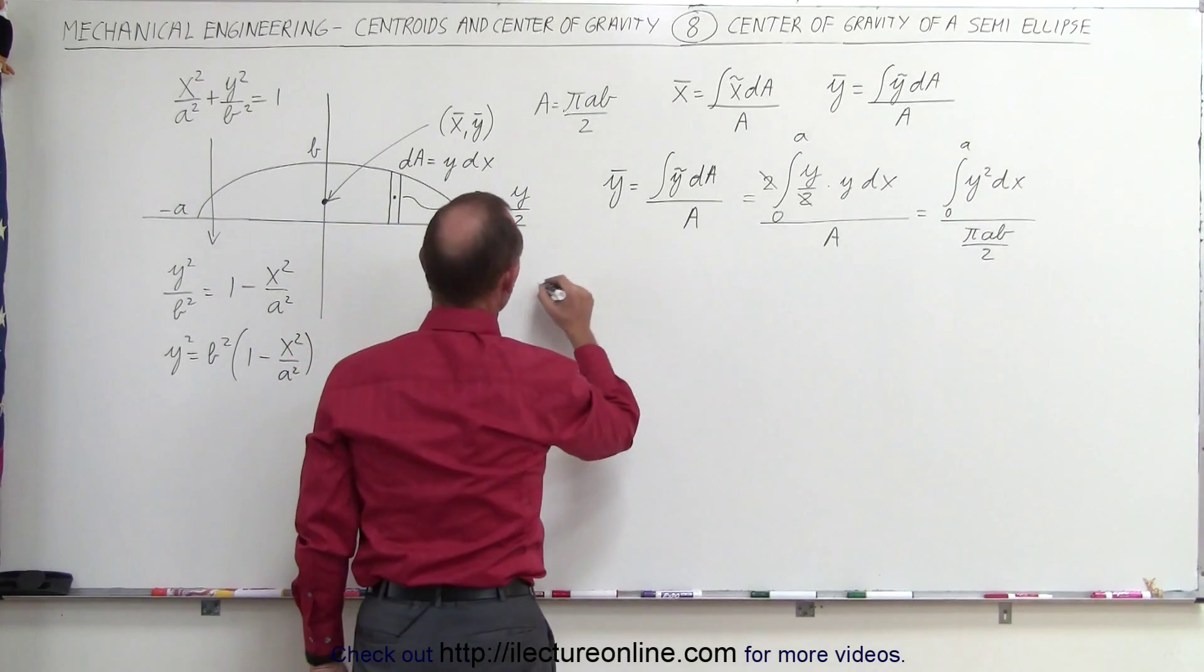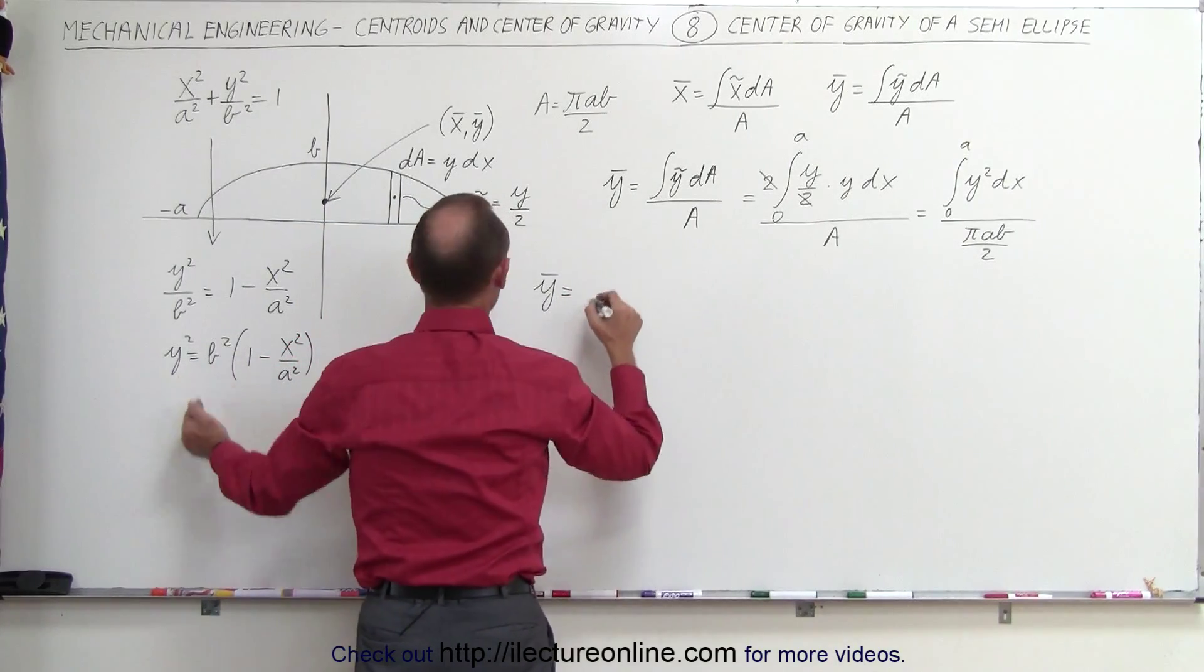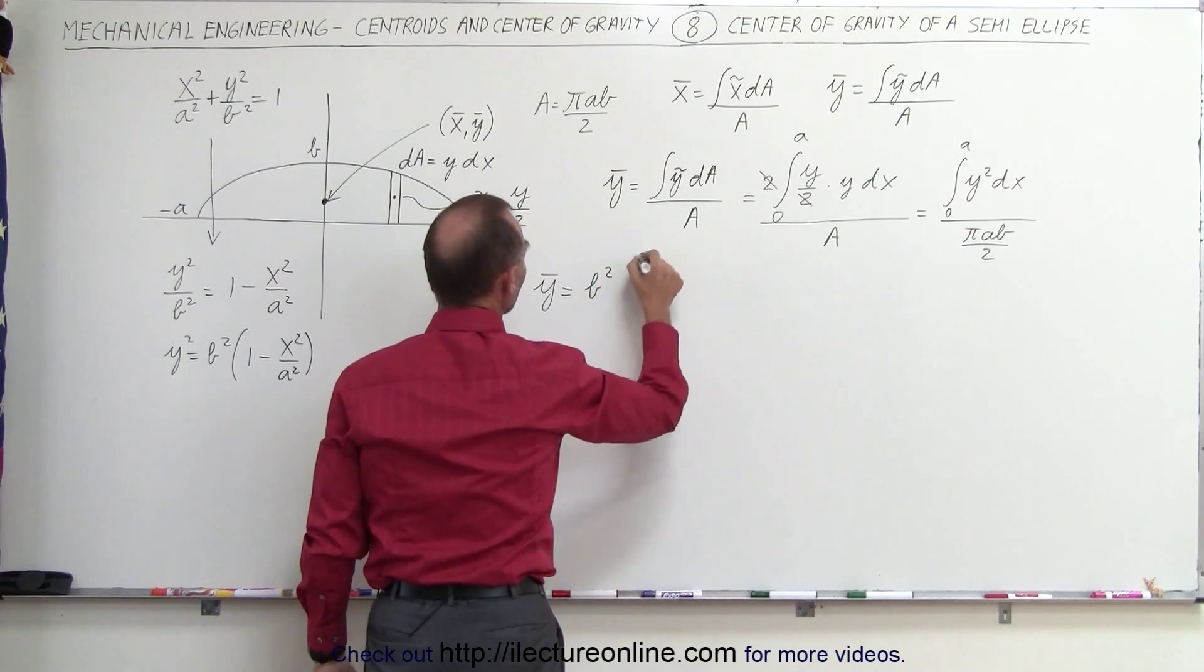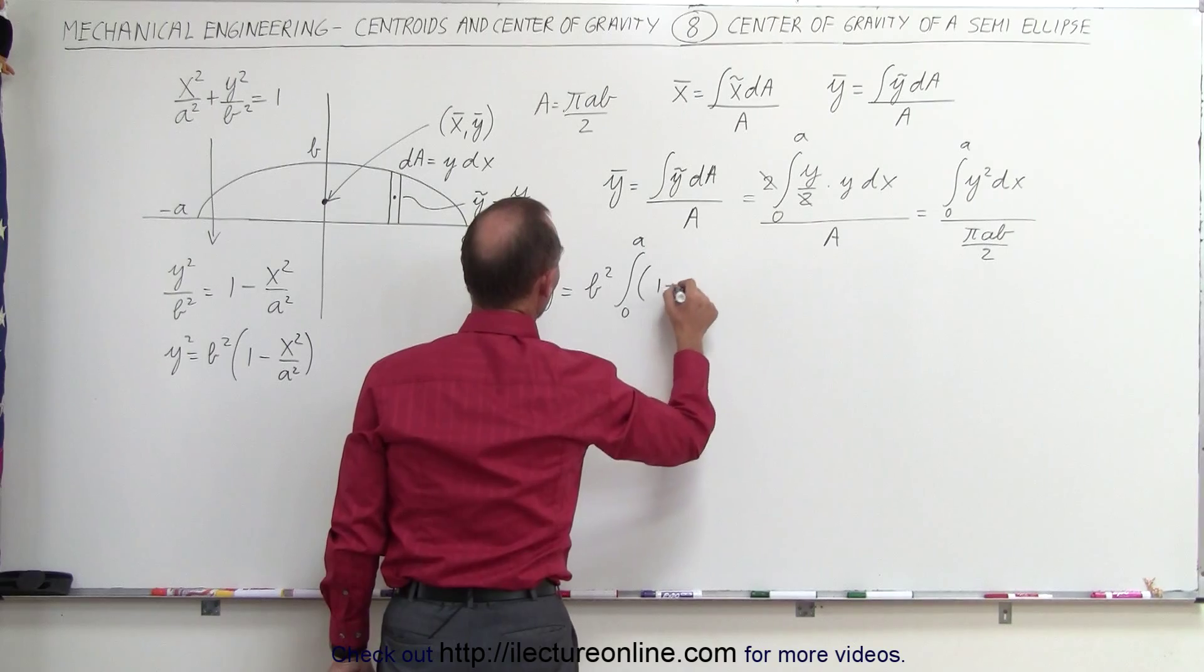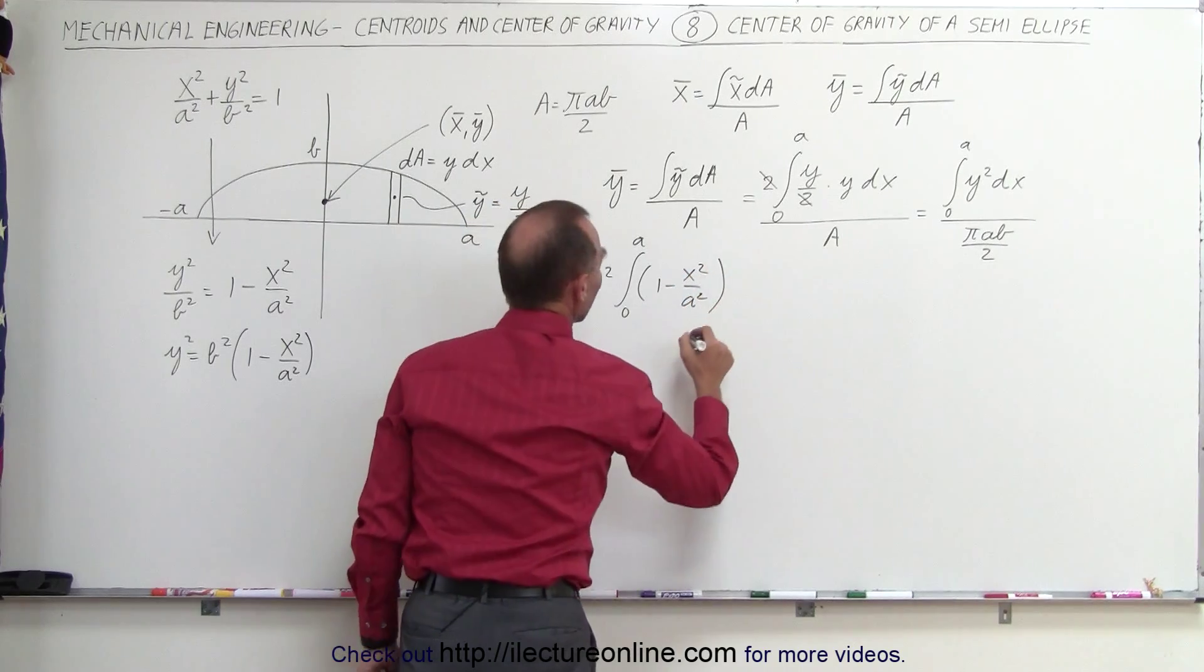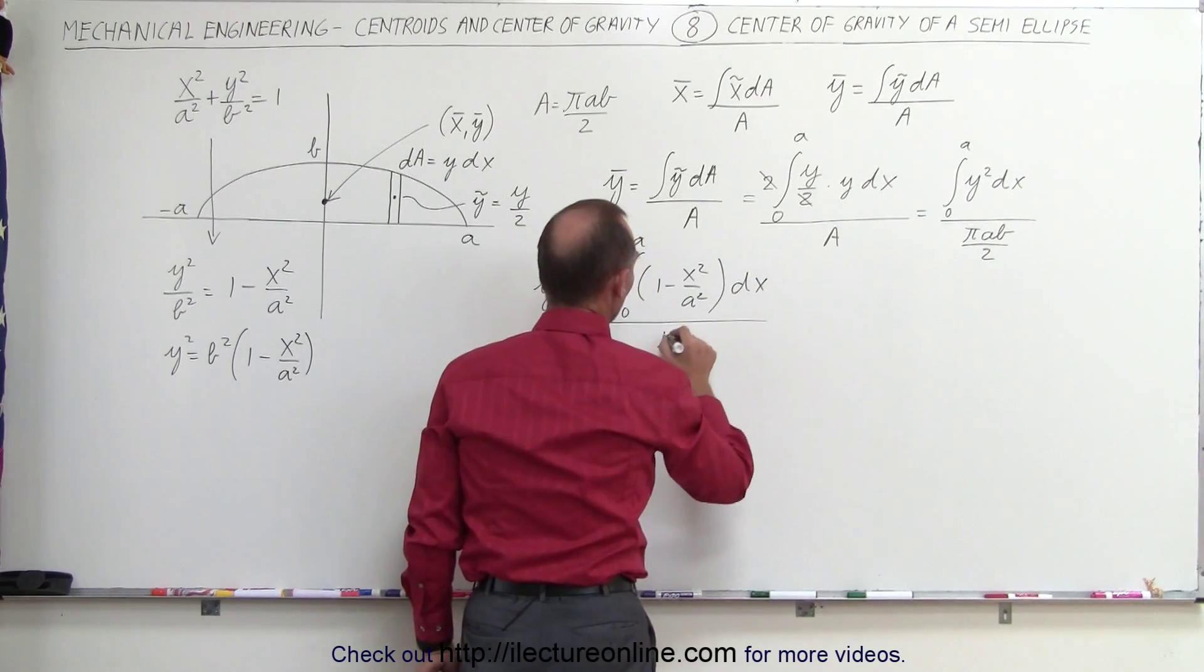So when we do that, we get the following. The y-coordinate of the center of gravity is equal to, factoring out the b², we get b² times the integral from 0 to A of the quantity 1 minus x² over a² times dx, all divided by πAB over 2.